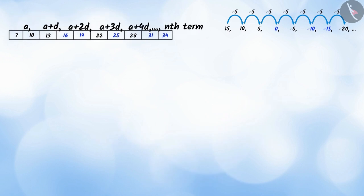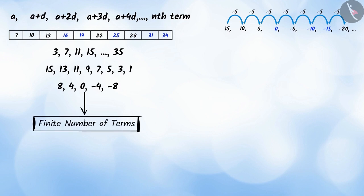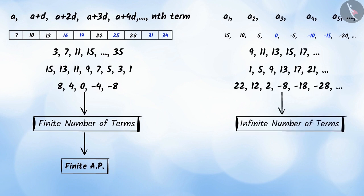If we observe these lists here, which are AP, we see that every AP has the last term, i.e., the number of terms is fixed. Such an AP is called a finite AP. And an AP without a last term, i.e., the number of terms is not fixed, is called an infinite AP.